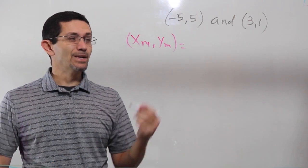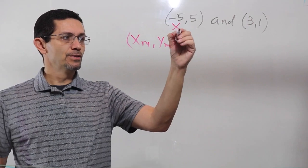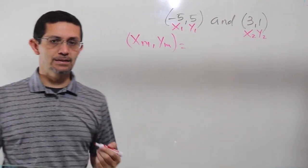First thing we do is we label our points. This is going to be my first point, this is going to be my second point. So this is X1, Y1, and this is X2, Y2. That's the first thing that I do.